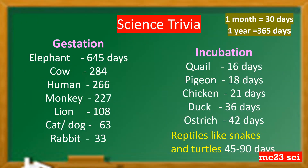For science trivia — gestation is the period from fertilization to birth. Take a look at the data: elephant takes 645 days, cow 284 days, human 266 days, monkey 227 days, lion 108 days, cat and dog 63 days, and rabbit 33 days.